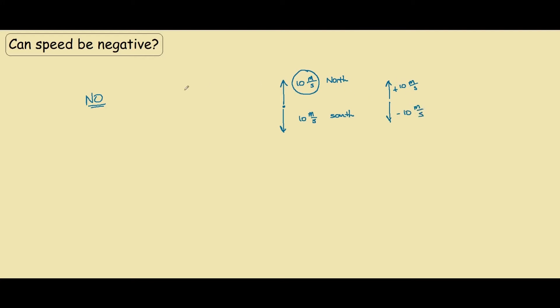But when we talk about speed, we only look at the magnitude. So we only care about this 10 over here and 10 over here. Likewise, we look at both velocities. We can see that both of them are 10 meters per second, and this is what we call a speed.